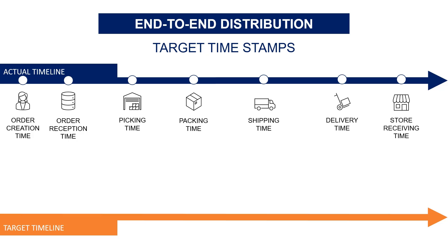Before starting to measure performance, you need to fix target lead times per process with the warehousing and transportation operations teams. To measure performance, you then just need to spot failures by comparing actual performance versus these targets. You can also estimate when each process should end — for instance, the expected picking date — by considering the order creation and transmission target lead times to estimate when the warehouse is supposed to receive the order and start picking.